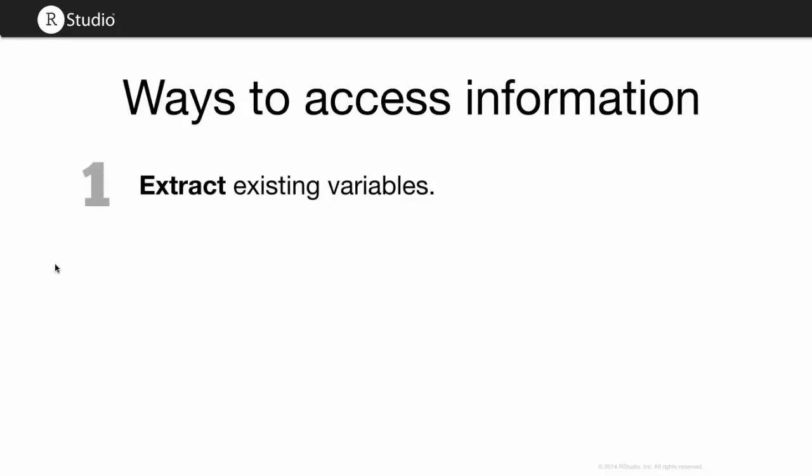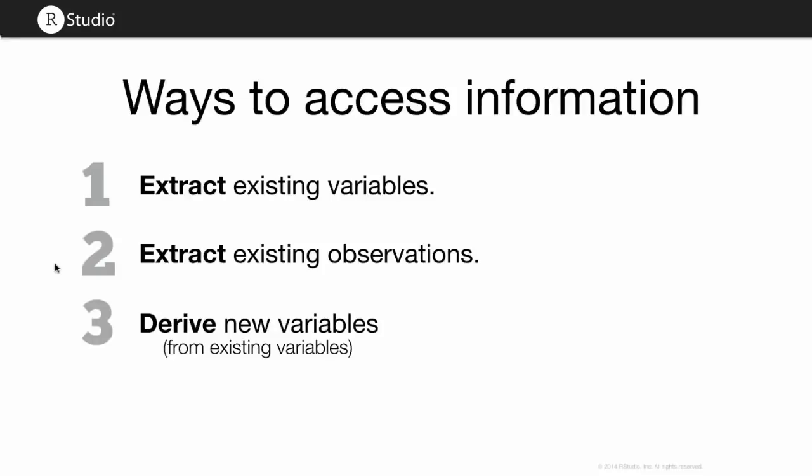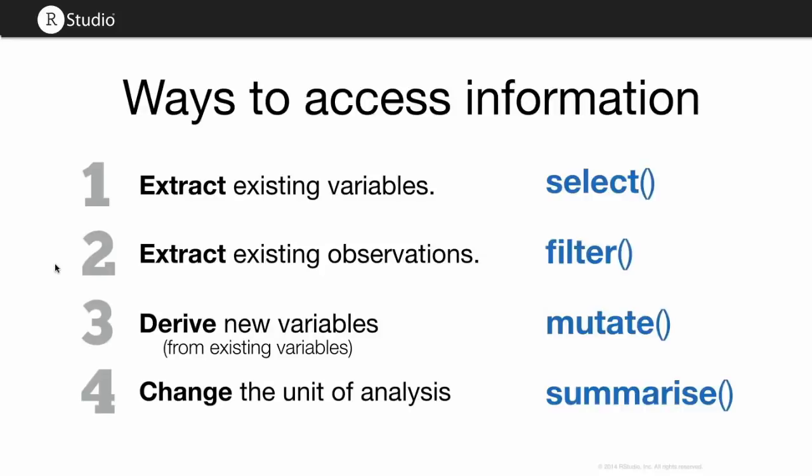So when it comes to accessing information in your data frame, it can help to just extract information that's already there to avoid the sort of overwhelming amount of distraction that the other variables provide. So you can extract variables, you can extract observations, you can derive new variables, and you can change the unit of analysis that the dataset displays. And I'll talk about that when we get there. dplyr provides four functions, each dedicated to doing one of these things. And let's take a look at them starting with select.